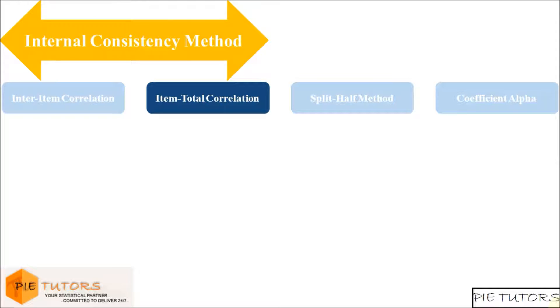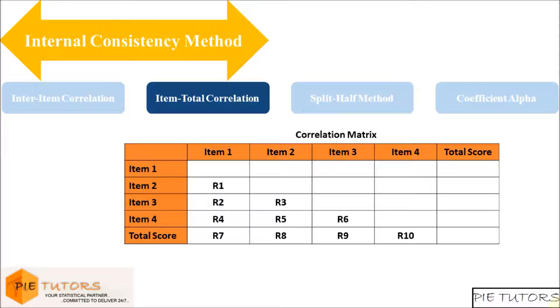Another method to determine internal consistency of items of a measure is by looking at item to total correlation. We can correlate each item with the total score to examine the internal consistency of a measure. This gives us an idea of the contribution of each item towards the reliability of the measure.